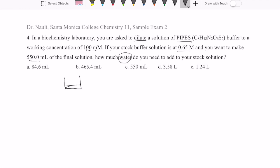So you start with a smaller volume of solution, and this is the one that is at 0.65 molar. You're going to add some water to make this solution more diluted. And that's the new solution with concentration of 100 millimolar and volume of 550 milliliters.